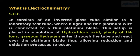It consists of an inverted glass tube similar to a laboratory test tube where a light and fine platinum wire is connected to a thin platinum blade. This setup is placed in a solution of hydrochloric acid. Plenty of H plus ions, gaseous hydrogen enter through the tube and react over the platinum blade, thus allowing reduction and oxidation processes to occur.